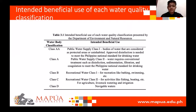This table shows the beneficial use of each water class which the Department of Environment and Natural Resources (DENR) has classified. Class AA, Public Water Class 1, is intended for waters having watersheds that are uninhabited and otherwise protected. Class A, Public Water Supply Class 2, is for sources of water supply requiring complete treatment. Class B, Recreational Water Class 1, is for recreation like boating and swimming. Class C, Recreational Water Class 2, is for boating, fishing, and other related activities. Class D is for navigable waters such as lake, river, swamp, and oceans.